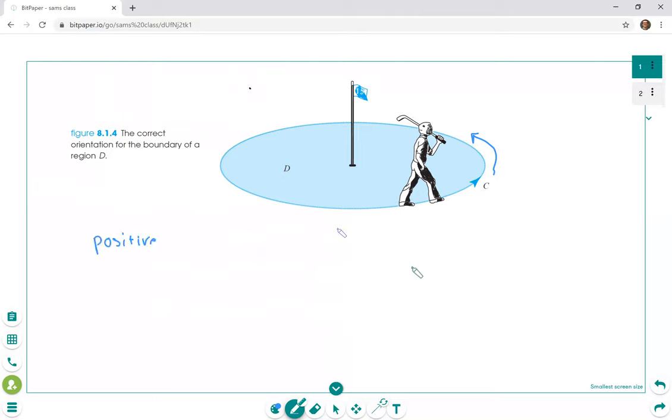So positive orientation in general is if we walk along the curve, the region is on our left.